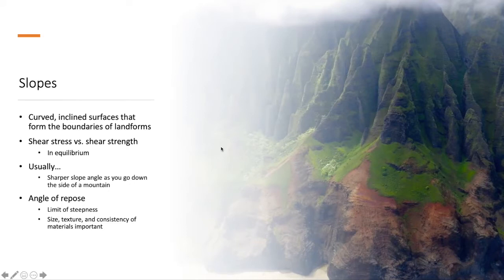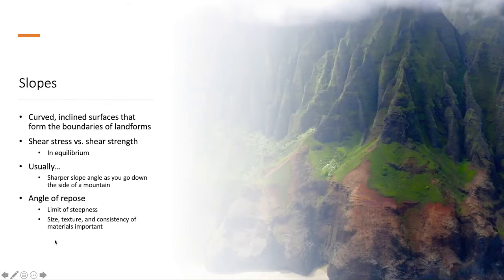We can also think about this in the context of the angle of repose. The angle of repose is the maximum level of steepness that you can have in a particular slope. That is really dependent upon the size, the texture, the consistency, and even the temperature to some extent of all the materials present on that slope. The angle of repose is the maximum slope before the slope begins to degrade and you have an event — whether it's a rock slide or some sort of other weathering event.